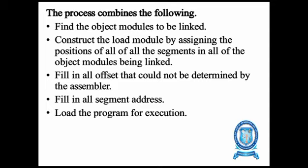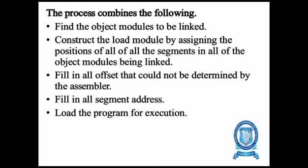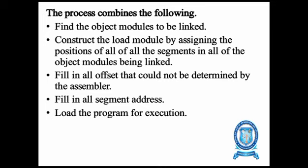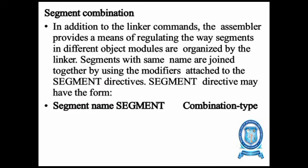Linking and relocation: the linker process combines the following steps — find the object modules to be linked, construct a load module by assigning positions to all segments in the object modules being linked. The source module is connected to the assembler, assembler output is connected to the object module, and that output is given to the loader. The program is then loaded and executed, with execution output given from the input-output drivers.